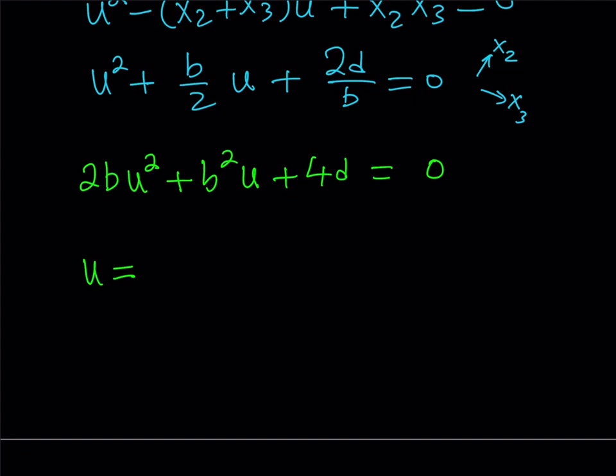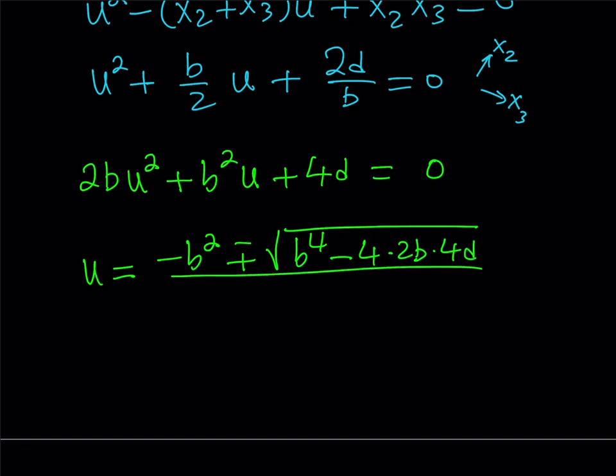Let's go ahead and do that, and when we do, we're going to be getting the values of x2 and x3 from here. So, u is going to equal negative b, which is negative b squared, plus minus the square root of b squared, which is b to the fourth power, minus 4ac, 4 times 2b, or not 2b, times c, which is 4d. Okay, divided by 2 times a, which is 4b.